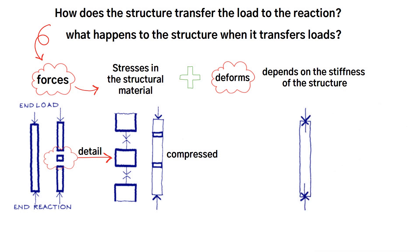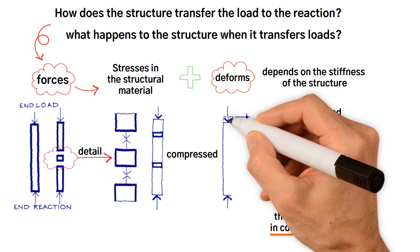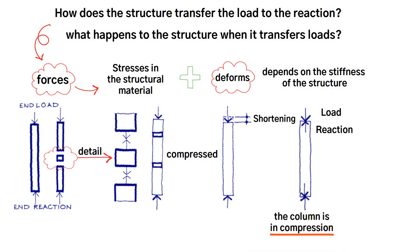The column transfers the load to the reaction by a system of squashed slices, or to use the engineering description, the column is in compression. Not only is the column in compression, but it also deforms by shortening. This happens because each slice becomes thinner on being squashed.